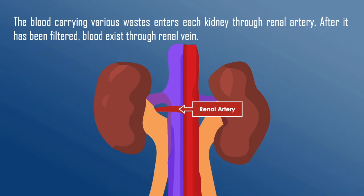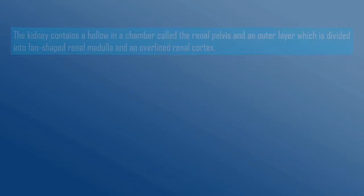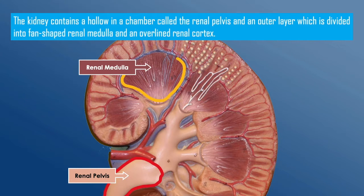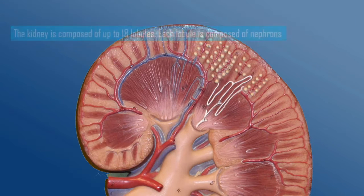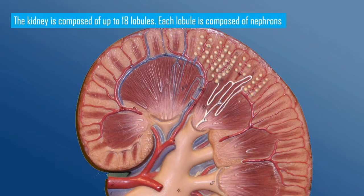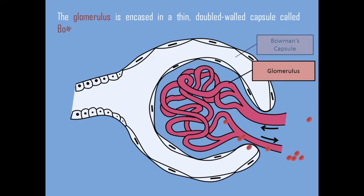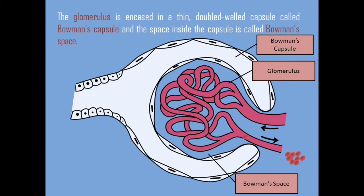After it has been filtered, blood exits through the renal vein. The kidney contains a hollow inner chamber called the renal pelvis and an outer layer which is divided into fan-shaped renal medulla and an overlying renal cortex. The kidney is composed of up to 18 lobes, and each lobe is composed of nephrons. The glomerulus is encased in a thin double-walled capsule called Bowman's Capsule, and the space inside the capsule is called Bowman's Space.